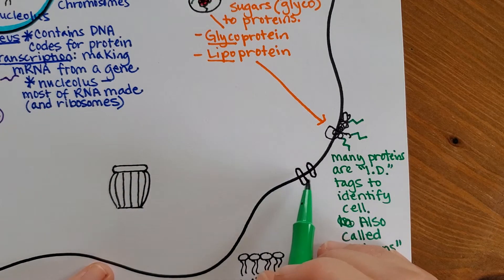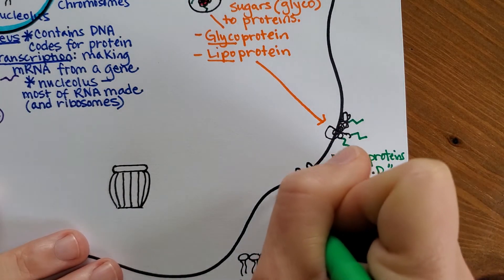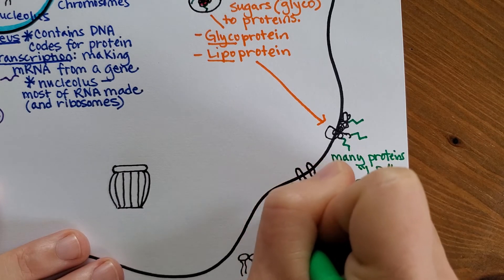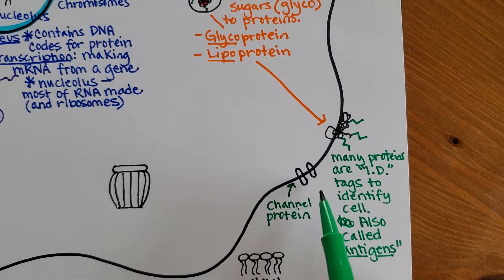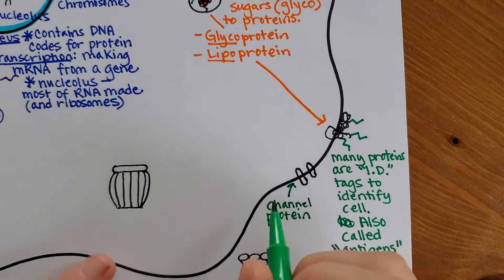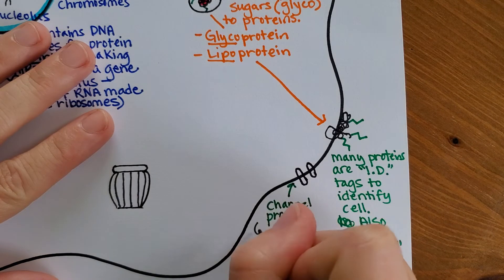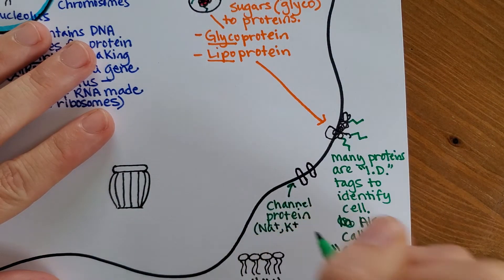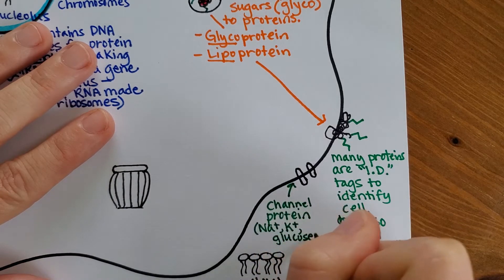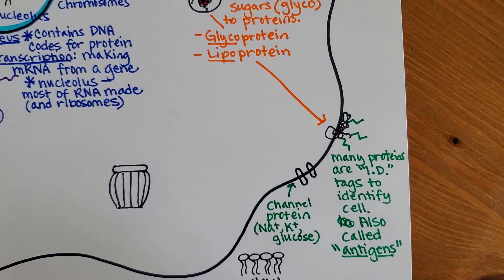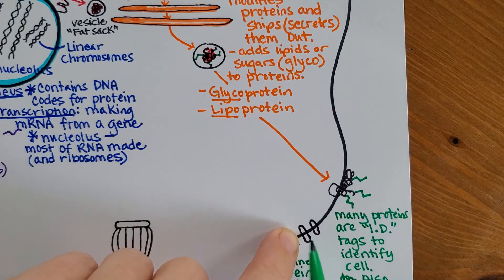Another example of where a protein might end up, I have here is a channel. This would be a channel protein. And that allows things to come in or out of a cell. So maybe sodium can come in, or maybe it's a potassium channel for potassium to leave. Lots of different channels, or maybe it's a glucose channel so that sugar can come into a cell. And those get made from the Golgi. And then they get shipped and embedded in the membrane.